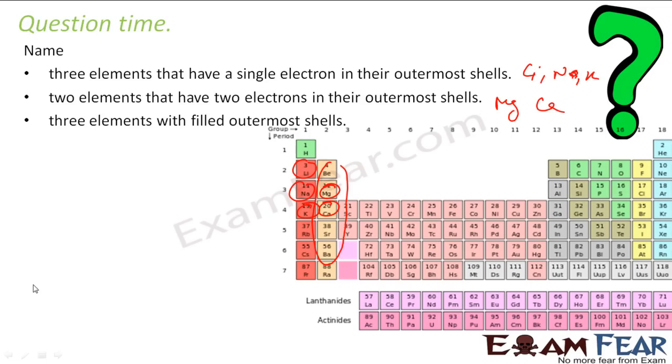Three elements filled with outermost electrons. So I know that these elements, the last one, are filled with outermost electrons. So I can name these as helium, neon, argon, krypton. They are all elements whose outermost shells are filled. Very easy. If you have it in front of you, you can answer to all these questions in a fraction of seconds.